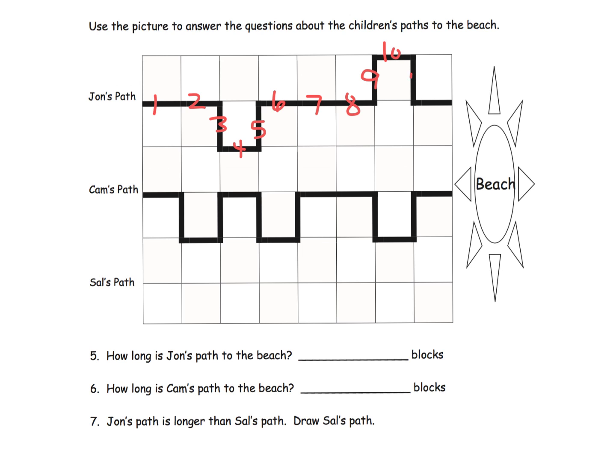Cam's path is 1, 2, 3, 4, 5, 6, 7, 8, 9, 10, 11, 12, 13, 14 blocks. Even though they're both heading to the beach, because they took different routes, Cam's path is longer than John's path.